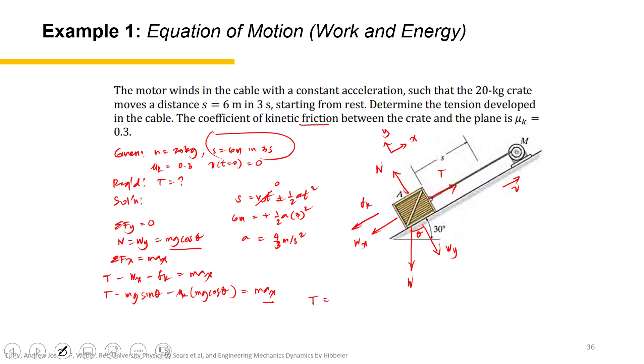So tension equals 20 kg times g times sine 30 degrees plus μ_k, which is 0.3, times 20 kg times g times cosine 30 degrees, plus 20 kg times four thirds meters per second squared.